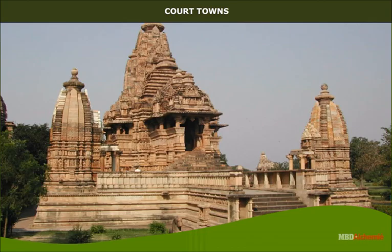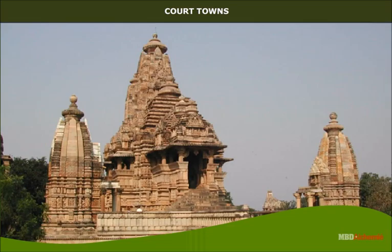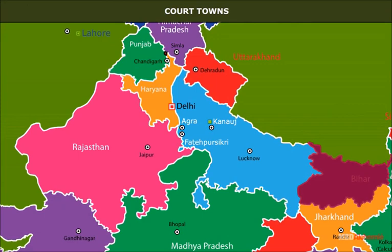These towns were centers of royal activities as well as trade, temples, markets and crafts. Many court towns such as Kannauj, Lahore, Delhi, Agra and Fatehpur Sikri evolved during the medieval period.